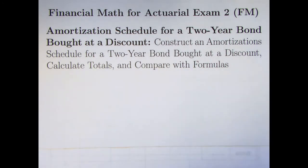In this video, we're going to look at an amortization schedule for a two-year bond bought at a discount. We'll be constructing the amortization schedules, calculating totals, and comparing with formulas that we looked at in the last couple videos.